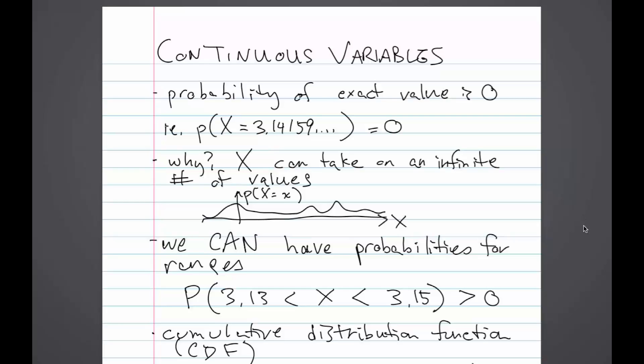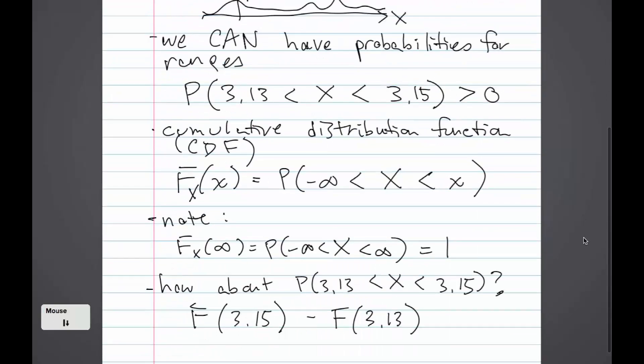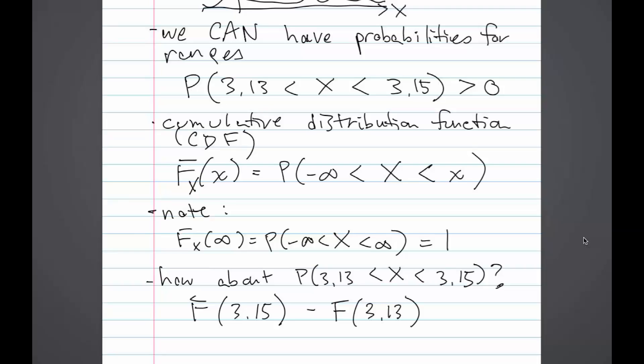We can have probabilities for ranges though. For example, we can say the probability of x being between 3.13 and 3.15 is greater than 0.